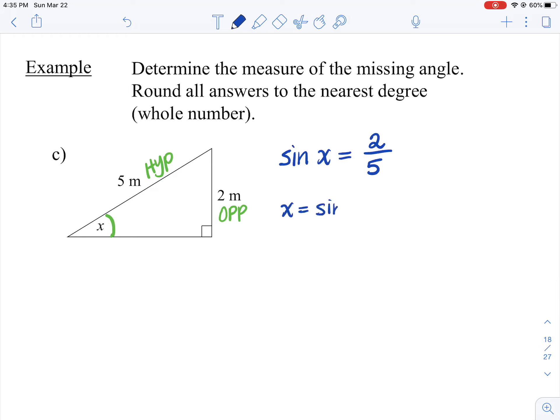So X is equal to sine inverse of 2 fifths. Okay, so you're going to plop that into your calculator. You get 24 degrees.